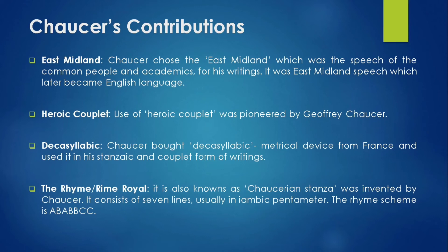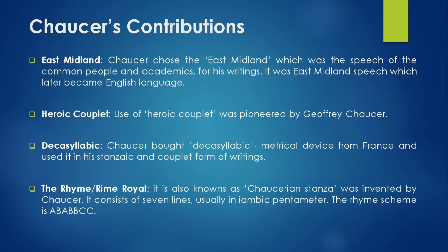The second contribution is the heroic couplet. The use of the heroic couplet was pioneered by Geoffrey Chaucer. He found a metrical device from France and used it in his stanzaic and couplet forms of writing. Another important contribution is the rhyme royal, also known as the Chaucerian stanza. It consists of seven lines usually in iambic pentameter, with a rhyme scheme of ABABBCC.